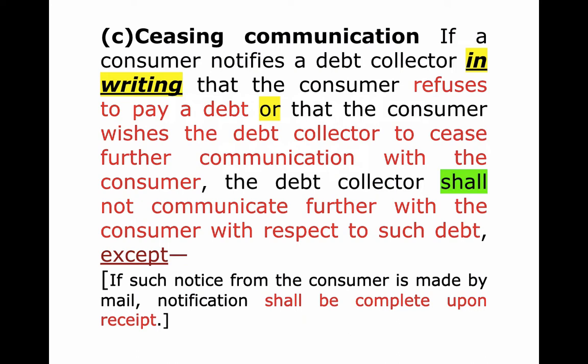Compare this to section 1692G, the validation notice — the one that says you have 30 days to dispute. That is an obligation the debt collector has to send you. They must mail it; it does not have to actually get to you, they just have to mail it. Here, if you want them to cease communication, they have to actually know that's what you mean. So it makes sense — they have to receive it.